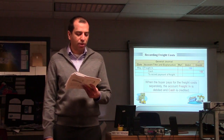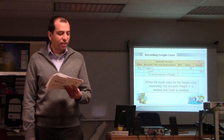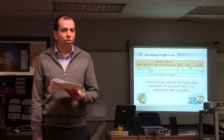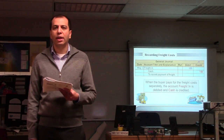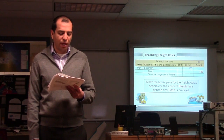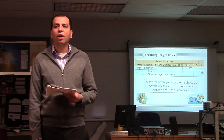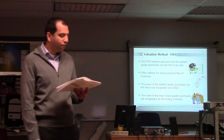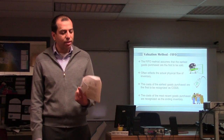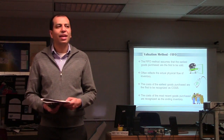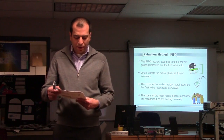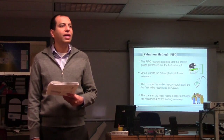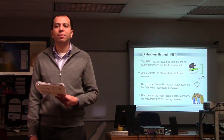The question is: what dollar values do you use to put into COGS and inventory, and how do you come up with those valuations? We'll talk about those today. There are four types of valuation methods in accounting. The first one is the Specific Identification method, also known as JIT.